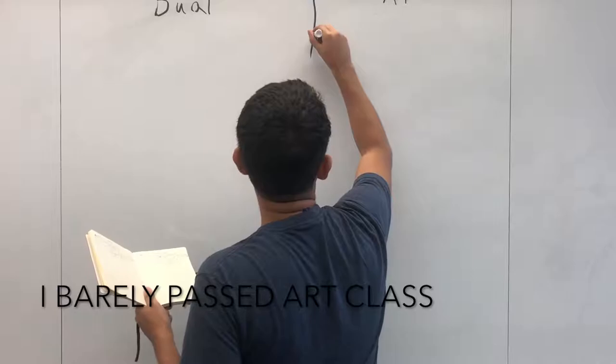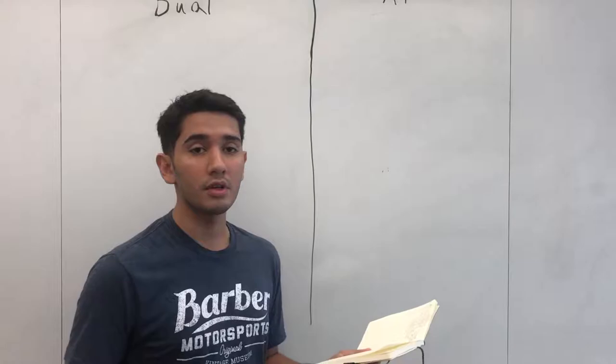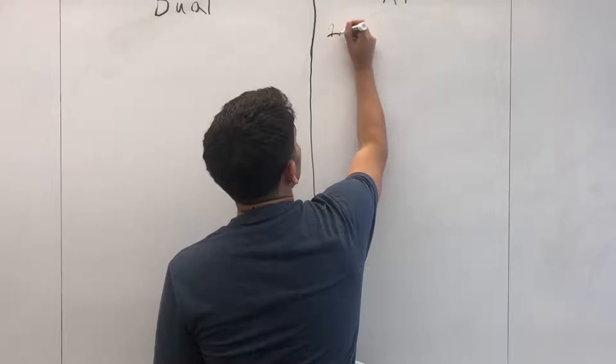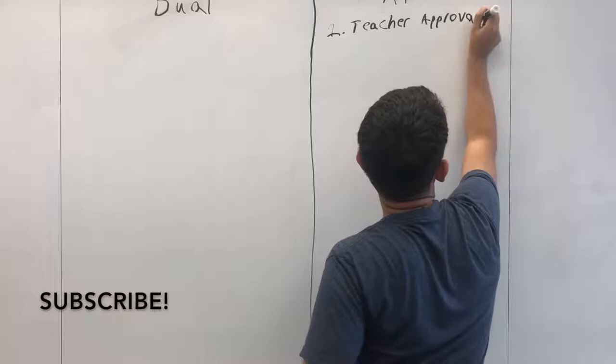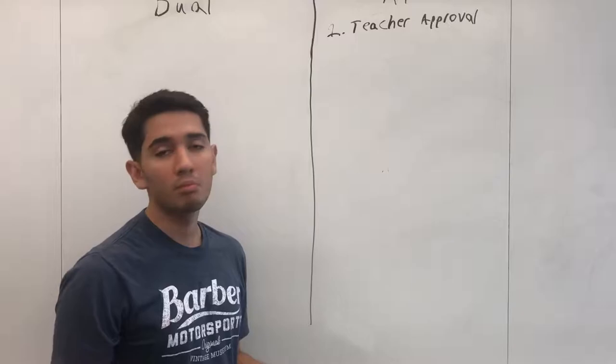Now basically what we're going to compare first is how you get in. For AP, basically all you need to do is get teacher approval. The teacher that you had last year just has to basically say, okay I believe the student is qualified to take this class and I think they'll succeed. So to get into an AP class, a teacher prior has to give the okay for it.